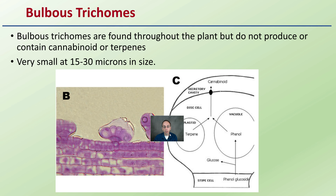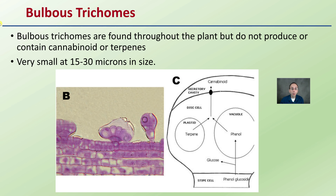Starting with the first one: bulbous trichomes are found throughout the plant but do not produce or contain cannabinoids or terpenes. They're very small, 15 to 30 microns in size, with a bulb-like appearance. Because they don't contain cannabinoids or terpenes, they're not a main focus for determining peak harvest.